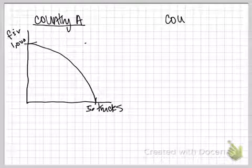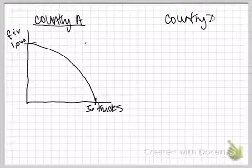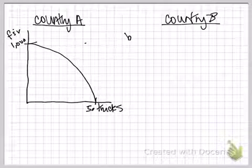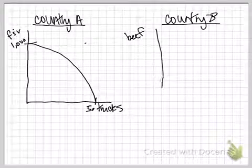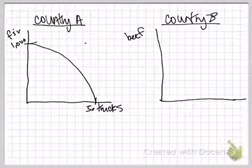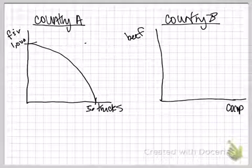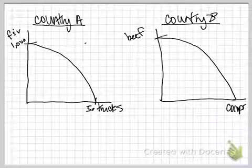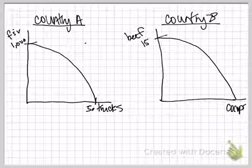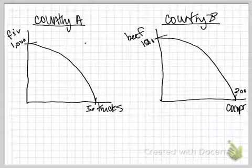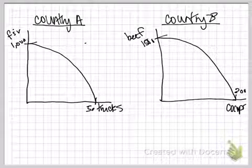And so let's suppose there's another country that we can trade with, Country B. And maybe country B can use their resources to produce beef, or they can produce computers. I'm just going to abbreviate here. And their PPF is going to look like this. And maybe if everything goes into beef, they'll have 1,500 pounds of beef. And if it all goes into computers, maybe they have about 200 computers. Again, the specific numbers don't really matter that much.